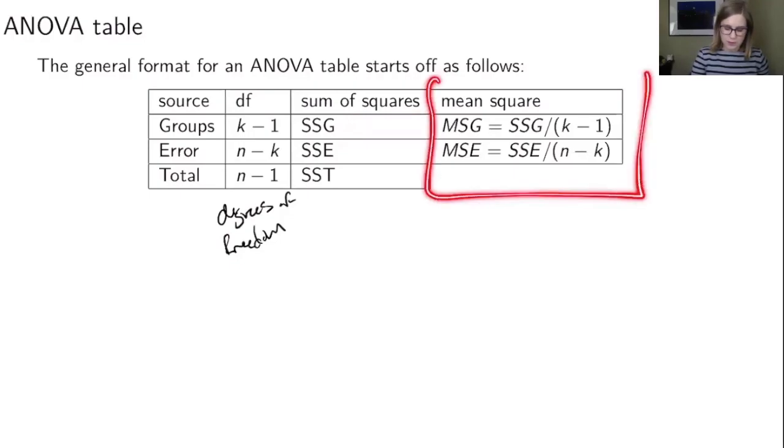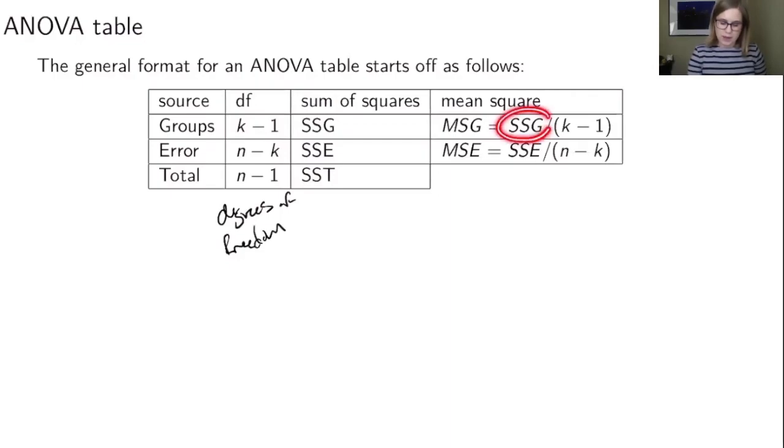And then the last column that we're going to talk about for right now is the mean square. So we've got fewer rows in this portion. We've got the MSG, the mean squares for the groups, and that's going to be the SSG divided by the degrees of freedom for the groups. So it's going to be this SSG divided by this k minus 1 and that will end up being our mean squares for the groups.